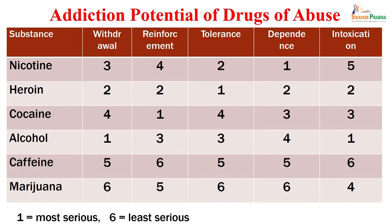An exercise has been done to assess the addiction potential of different drugs of abuse — nicotine, heroin, cocaine, alcohol, caffeine, and marijuana — across five criteria: withdrawal, reinforcement, tolerance, dependence, and intoxication. A score of 1 is most serious and 6 is least serious, meaning a lower score indicates higher addiction liability. Alcohol is relatively lower-scored (higher addiction potential), heroin is also towards the lower side, and nicotine as well. Caffeine is on the higher side (less addictive), and marijuana is also on the higher side.